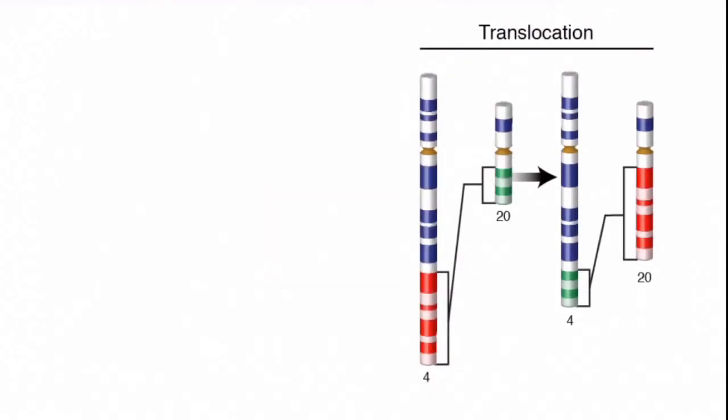Another is translocation. You see in the picture, a segment from number 4 chromosome is being inserted to the number 20 chromosome. And a segment from number 20 chromosome is being inserted to the number 4 chromosome. This is known as translocation. And in this case, the translocation is reciprocal.